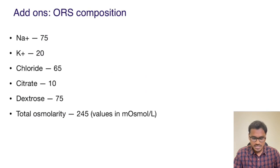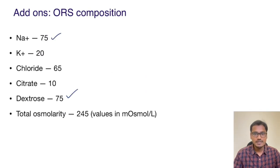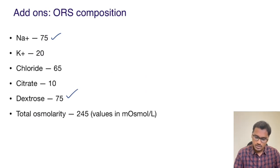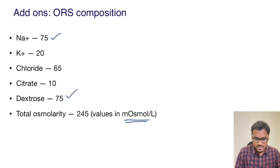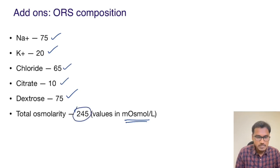So this is the primary reason why glucose is added along with sodium. A little add-on on the ORS composition: here we can see that sodium and dextrose are present in the maximum quantity, that is 75 milliosmoles per liter — all values are in milliosmoles per liter. There is also addition of potassium, chloride, and citrate, so the total osmolarity of ORS comes to around 245 milliosmoles per liter. Thank you, hope it's clear — if you have any doubts, drop them in the comment section and I'll be happy to make a video on it.